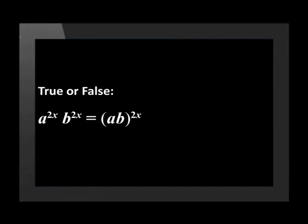So, a to the power of 2x multiplied by b to the power of 2x equals a times b all raised to the power of 2x. Is true.